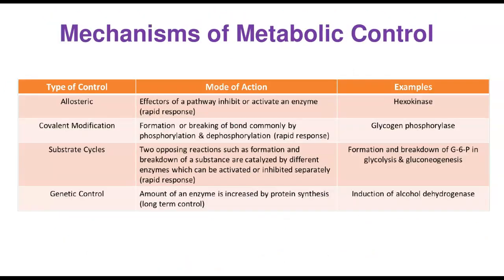There are several mechanisms involved in controlling metabolism — not just one. The first is allosteric control, where effectors of a pathway either inhibit or activate an enzyme. A good example is hexokinase, which is inhibited by its direct product glucose-6-phosphate that binds back on hexokinase to slow the reaction — a typical example of allosteric feedback control.